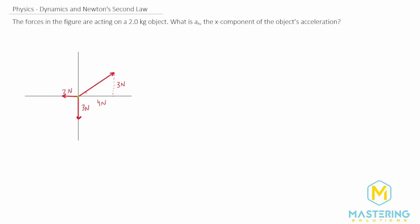When you look at the problem here, they've already broken up the vectors into the x and y components. The only one that really applies is this one. We have the y component of this vector and the x component of this vector. Since we need to figure out what the x component of the acceleration is, we'll only be taking the four and the two.